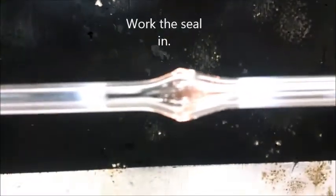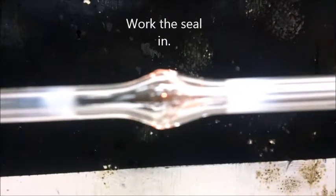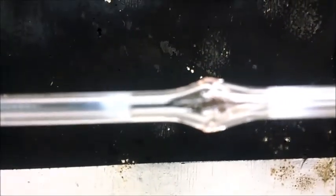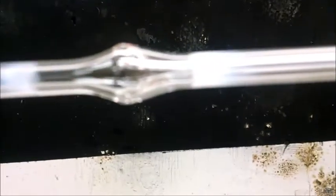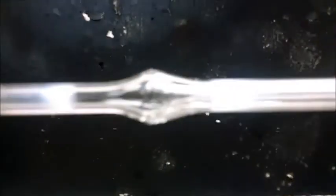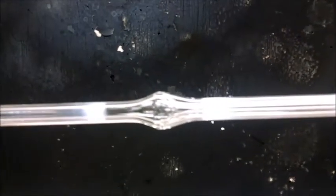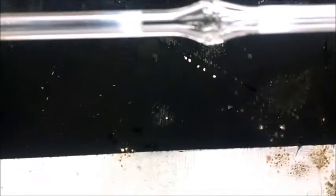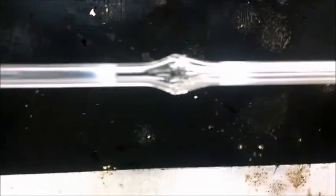Alrighty. Here's the seal done. You want to try to minimize the amount of gap between the inner tube and the outer tube. Now I go and fire polish everything out. So here's the finished product. There's the seal.